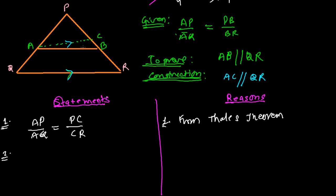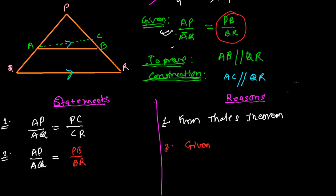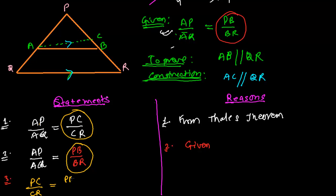From statements 1 and 2, since both PC over CR and PB over BR are each equal to AP over AQ, we can equate them: PC over CR equals PB over BR. This is from statements 1 and 2.